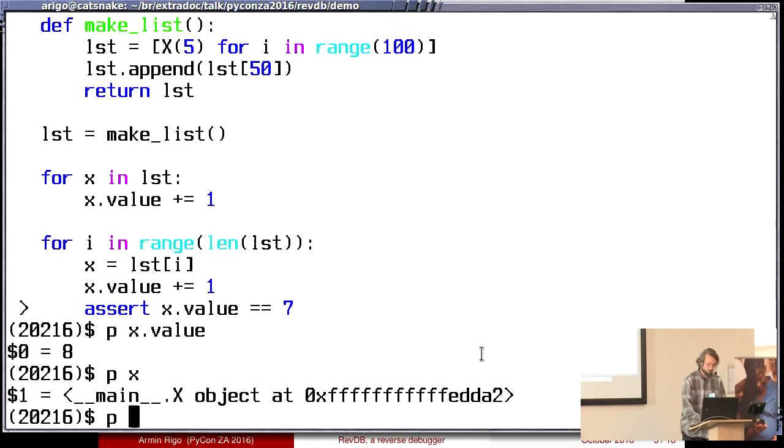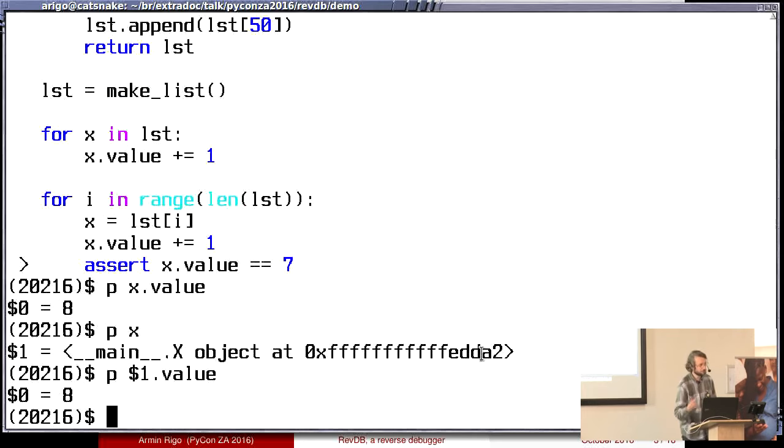I can use any Python expression, but it's a slightly extended syntax. You can use $1. So here I'm going to print $1.value and it gets the same 8 as before and the same $0 actually because it's the same object 8 as before. Well cool. This is what you get with normal debugger, but this is not normal debugger.